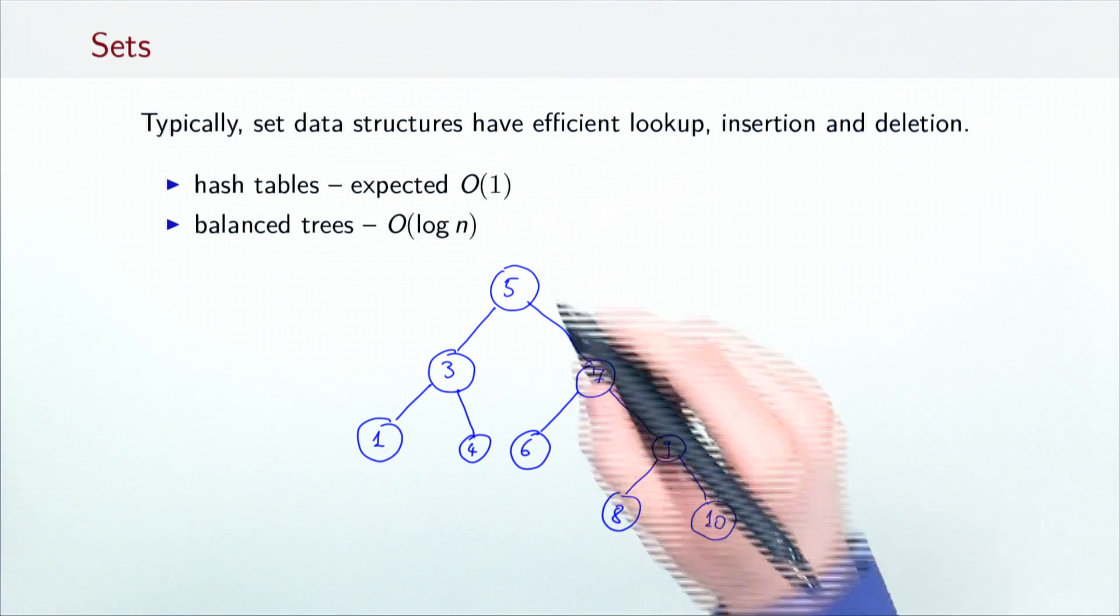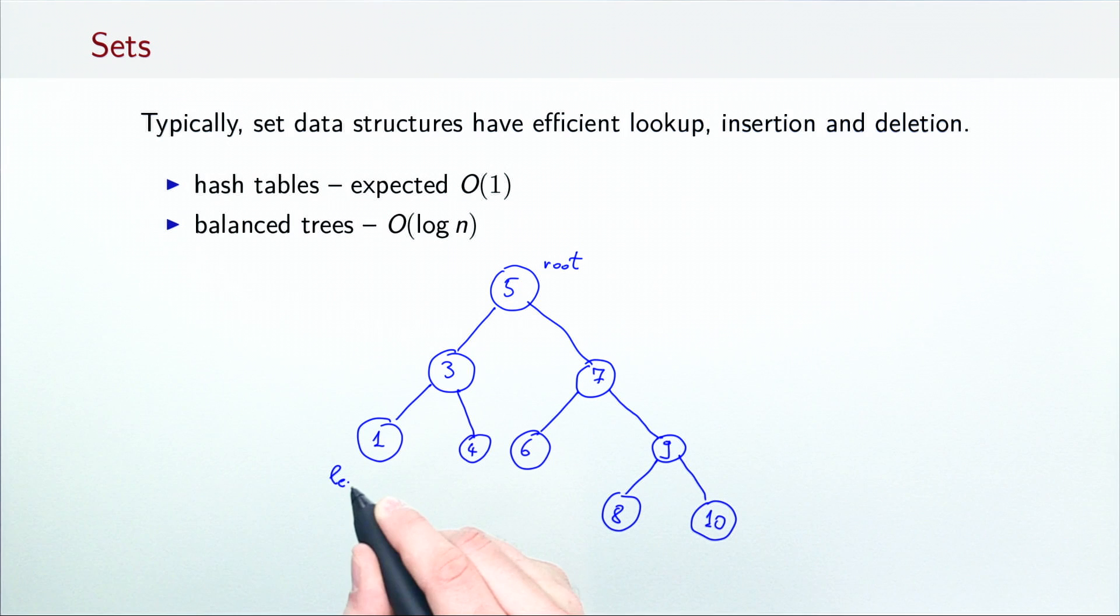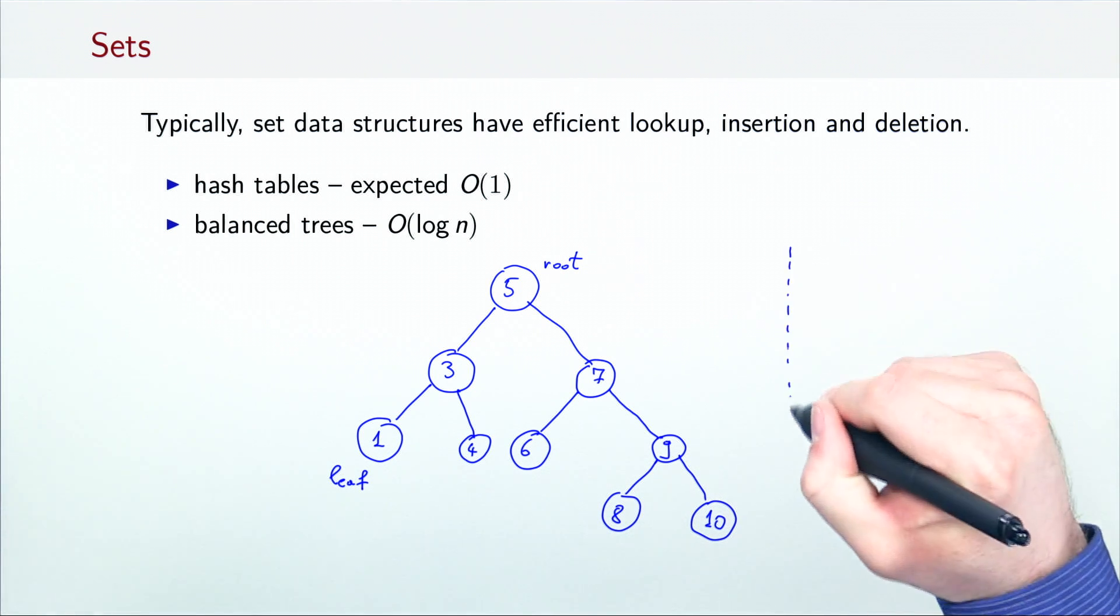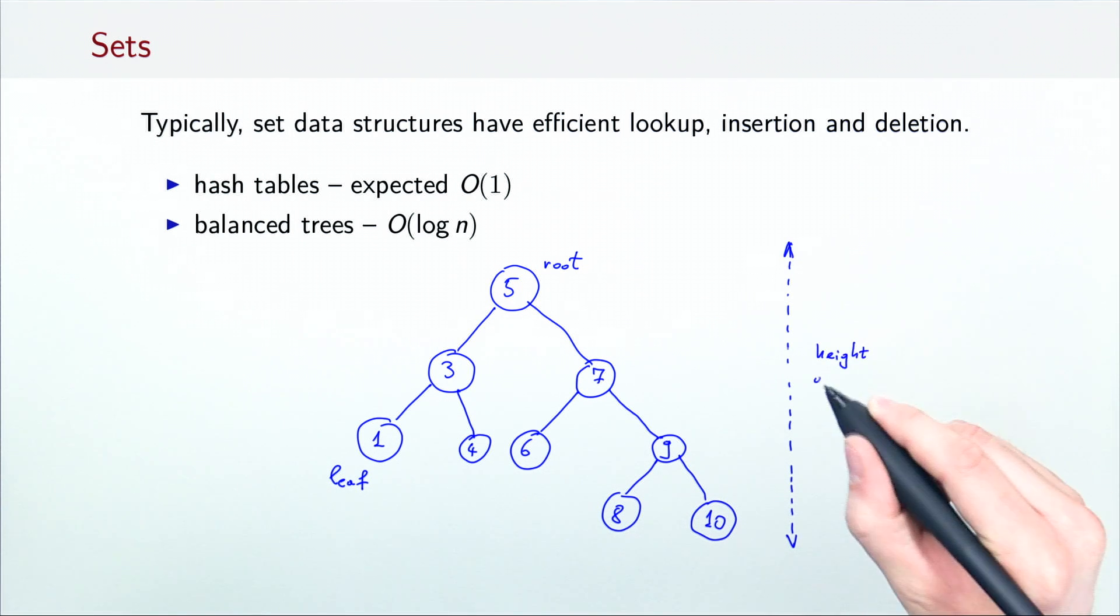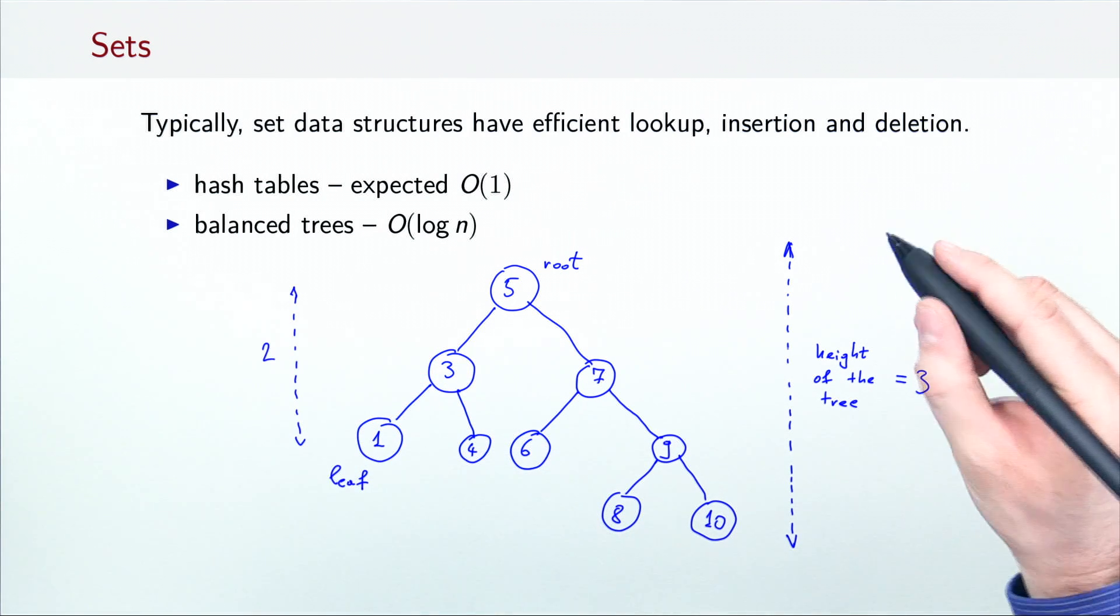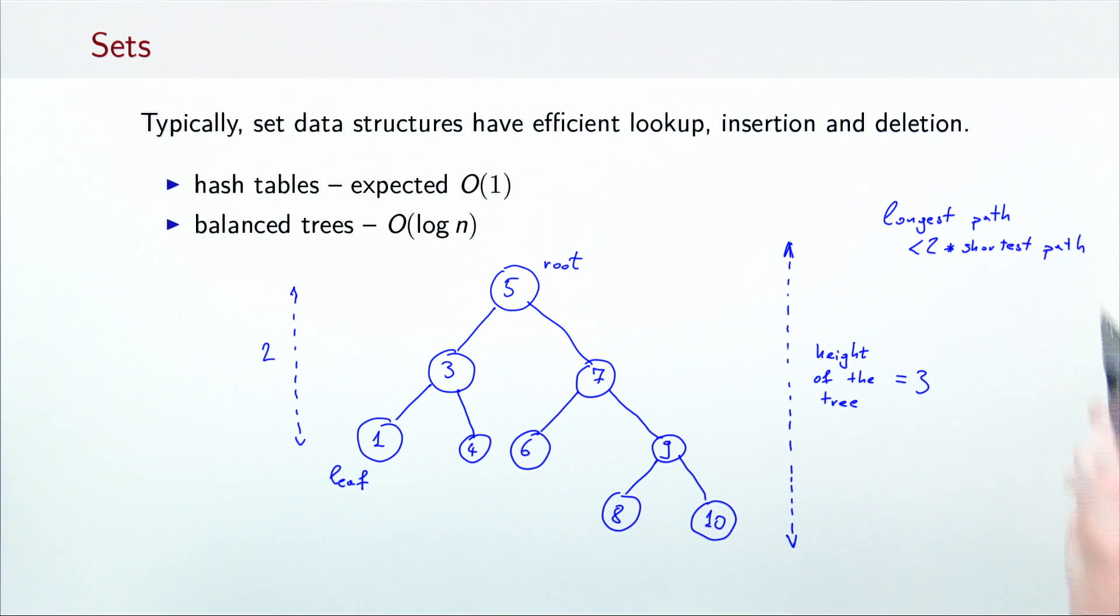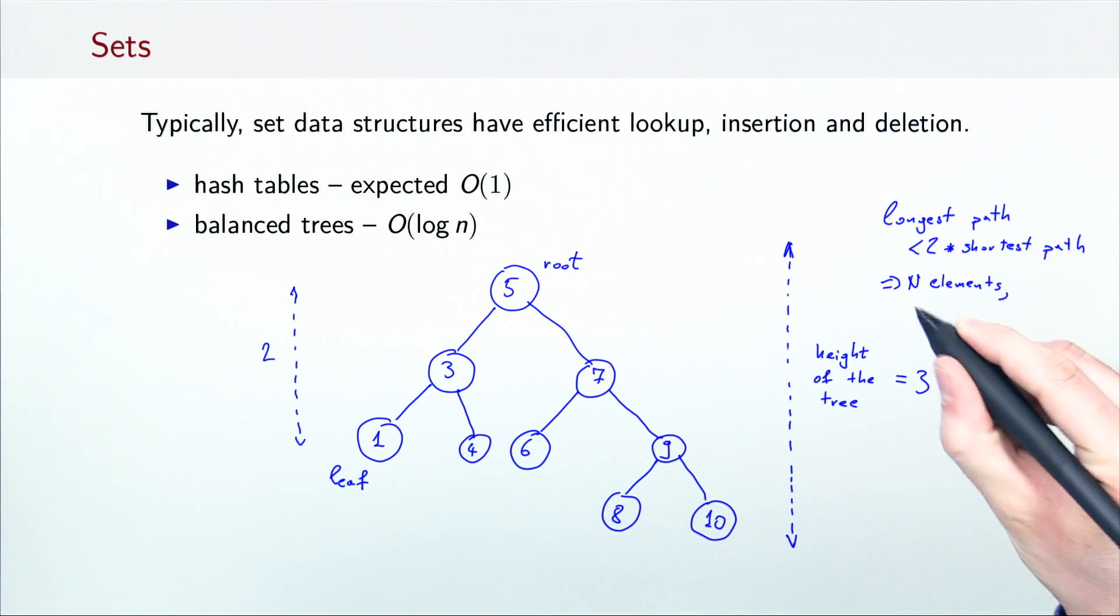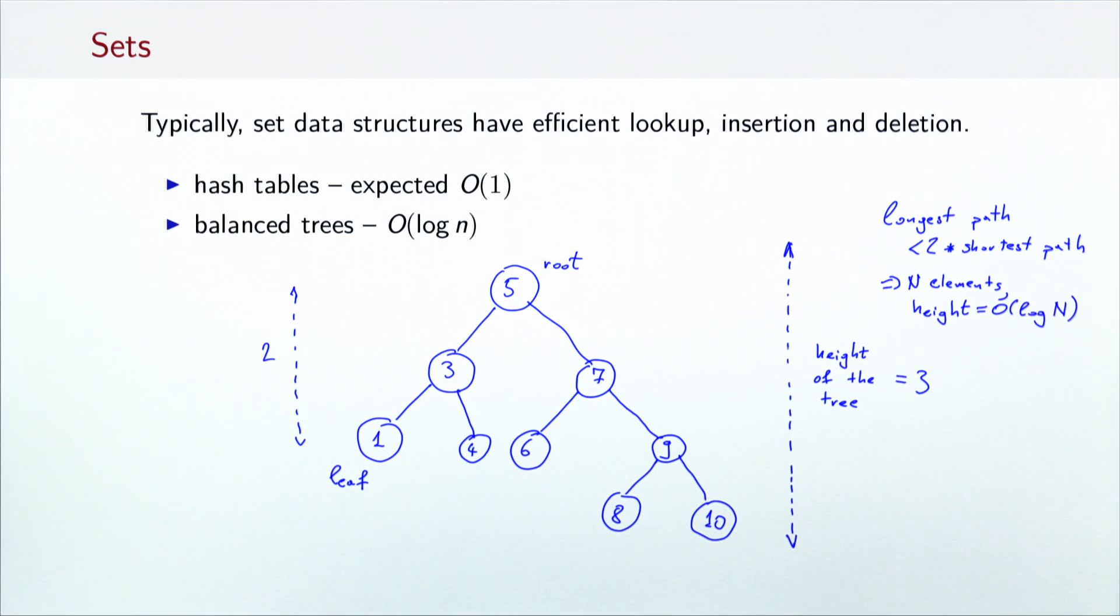Balanced search trees are composed of nodes that contain elements and optional child nodes. The topmost node is called a root of the tree. The nodes without children are called leaves. Balanced trees usually have the property that the length of the longest path from the root to the leaf is never two times larger than the shortest path from the root to a leaf. Generally, this property ensures that the height of the tree with n elements is O(log n).